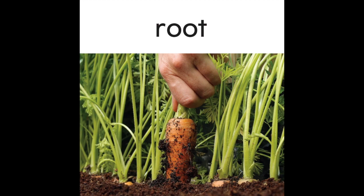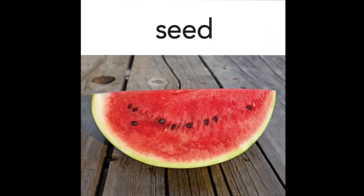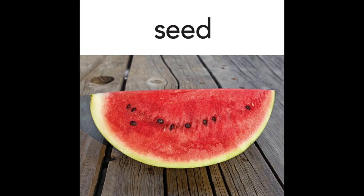For example, the orange part of a carrot is the root of the plant. Our last word is seed — say it with me: seed. A seed is a small hard part of a plant that can grow into a new plant. For example, you have to be careful when you eat watermelon so that you don't eat the seed.